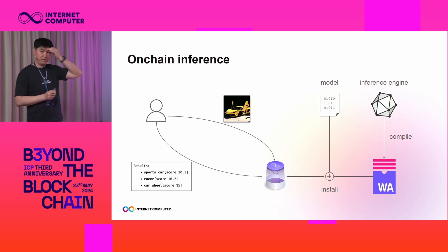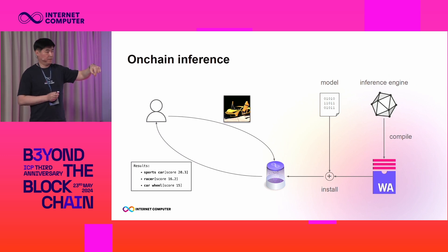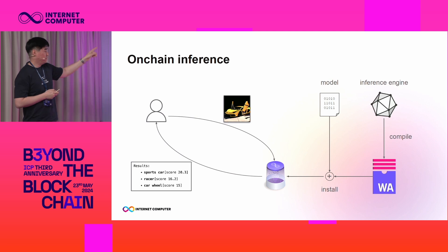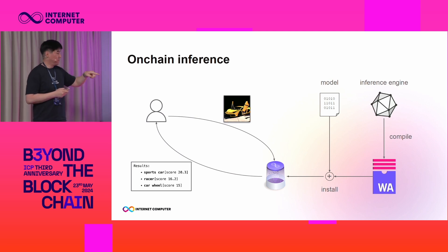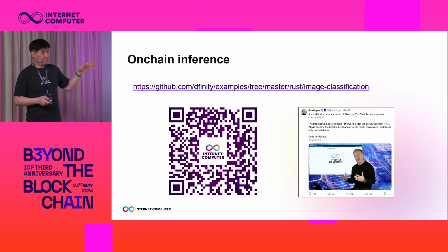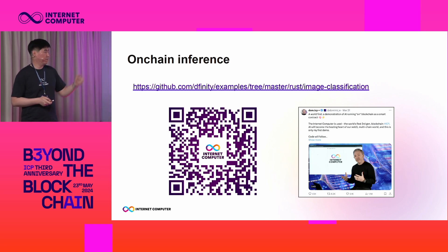To implement that demo, we took an off-the-shelf inference engine, compiled it to WebAssembly, then combined the WebAssembly with an open-source model, and put it inside a smart contract. The smart contract accepts images from users, runs inference over multiple blocks using deterministic time slicing, and returns the results. If you want to look deeper, I put a link to the source code, and you can also find the demo itself on X if you look for Dom's account.